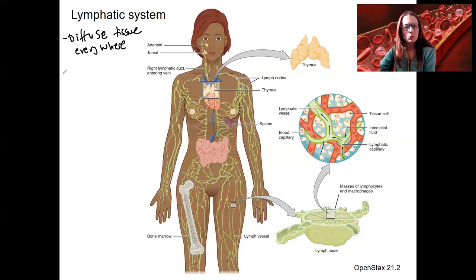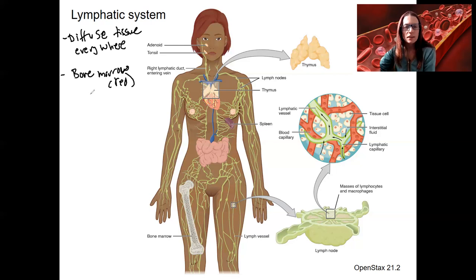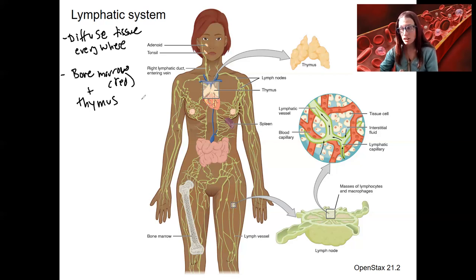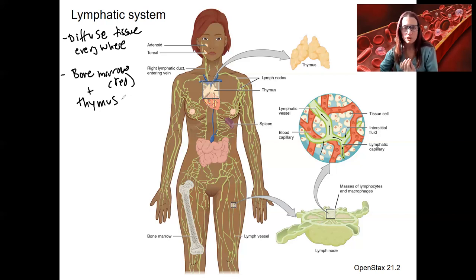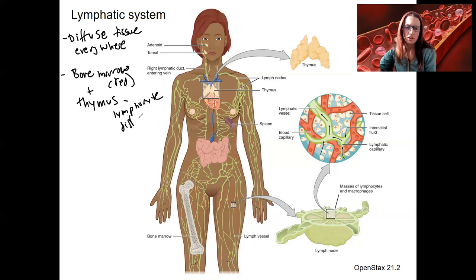The first two are considered primary lymphoid organs. This is the bone marrow — so red bone marrow — and the thymus. This is where lymphocytes actually differentiate through hematopoiesis, just like we saw with the blood lectures, and then mature, proliferate, and there's some selection. So lymphocyte differentiation and development.